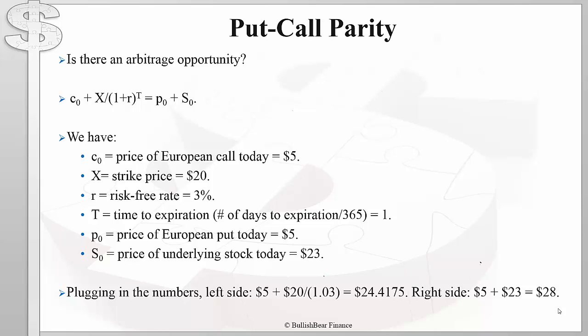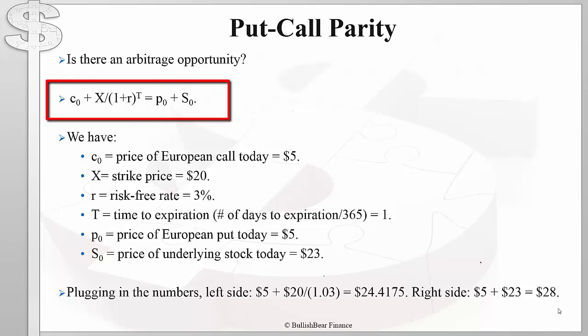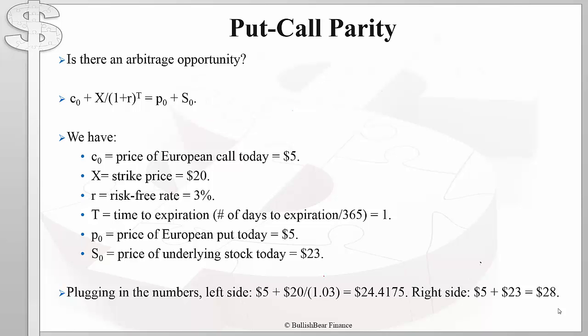Let's start with the first question: is there an arbitrage opportunity? For convenience, I am again copying and pasting the put-call parity equation here. From our example, we have C₀, the price of the European call option today, as $5. The strike price is $20. The risk-free rate is 3% and the time to expiration is one year.